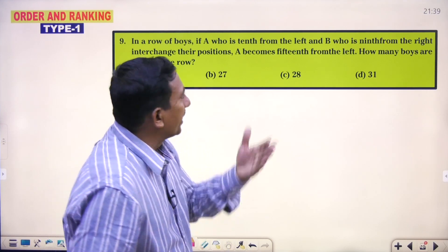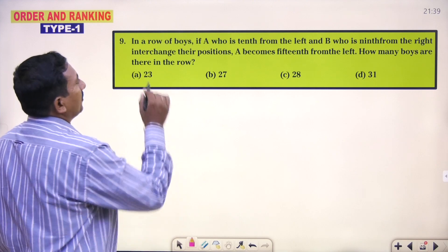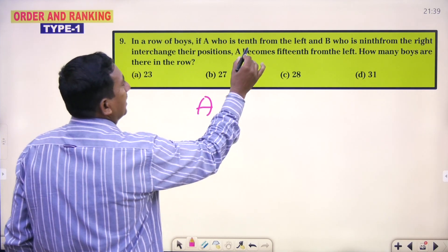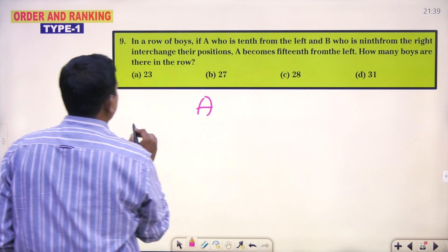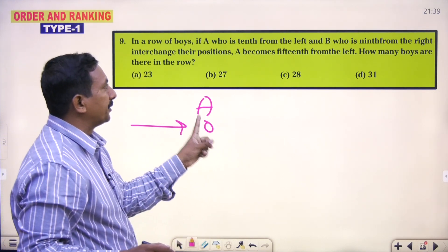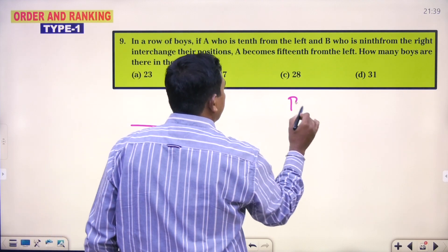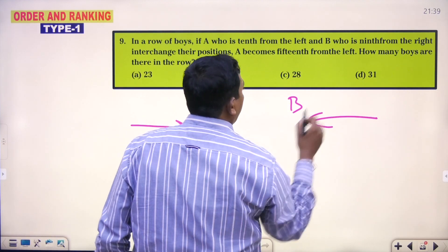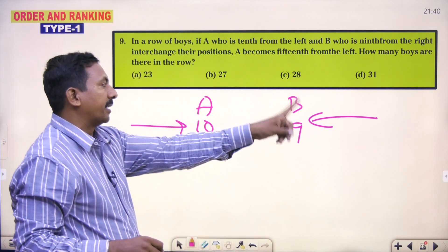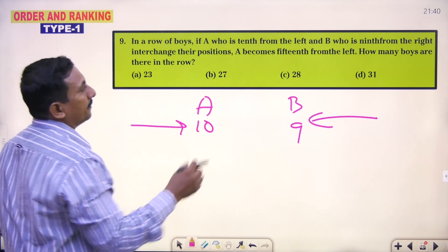Right master. In a row of boys, if A is 10th from the left, so A's position is 10th from the left. And B, who is 9th from the right, so B's position is 9th from the right hand and A's position is 10th from the left hand.